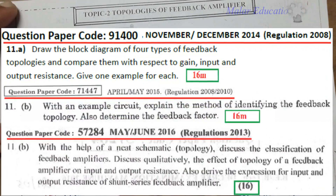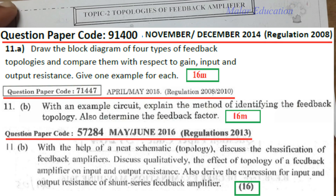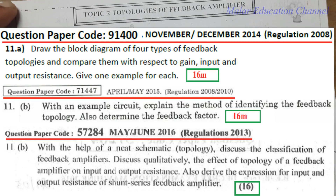These are questions already asked in Anna University theory examinations. First: draw the block diagram of four types of feedback topologies and compare them with respect to gain, input, and output resistance (November/December 2014). With an example circuit explaining the method of identifying the feedback topology, also determine the feedback factors (April/May 2015 and November/December 2019). Discuss the characteristics and classification of feedback amplifiers and the effect of topology on input and output resistance.